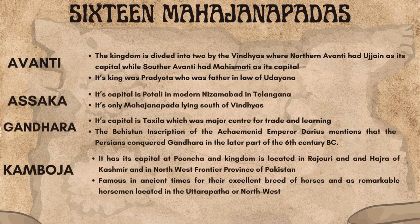The Matsya Kingdom was founded by Virata and its capital was Viratanagara. The Kingdom of Avanti was divided into two by the Vindhyas — Northern Avanti had Ujjain as its capital while Southern Avanti had Mahishmati as its capital. Its king was Pradyota, who was the father-in-law of Udyana. The Asmaka Kingdom had its capital at Potali, in modern Nizamabad in Telangana, and is the only Mahajanapada lying south of the Vindhyas.